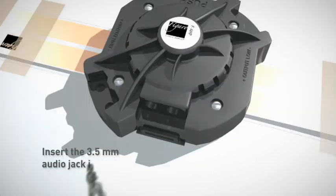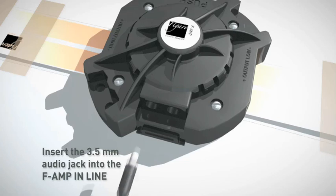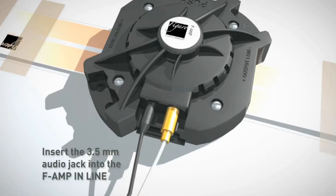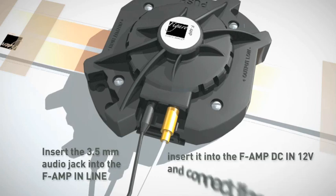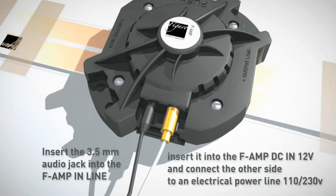Insert the 3.5mm audio jack into your audio source and the other side into the F-Amp in line. Take the power supply jack. Insert it into the F-Amp DC-in 12V and connect the other side to an electrical power line 110-230V.